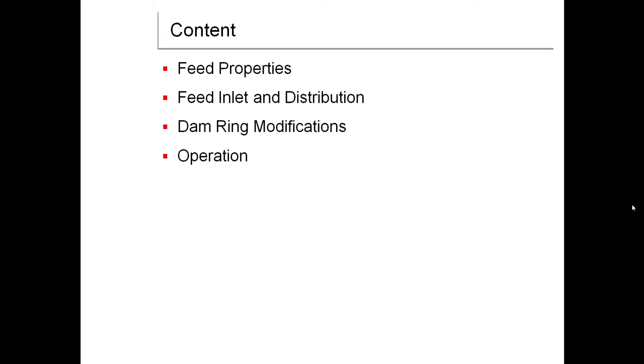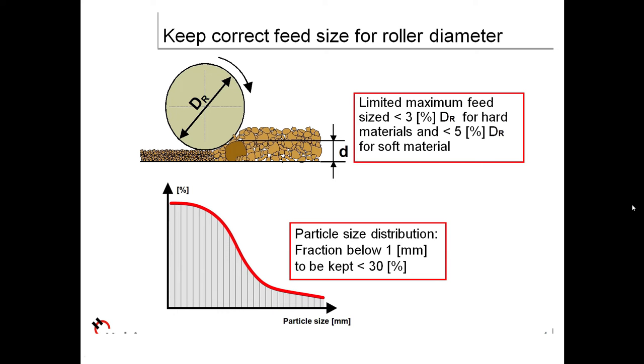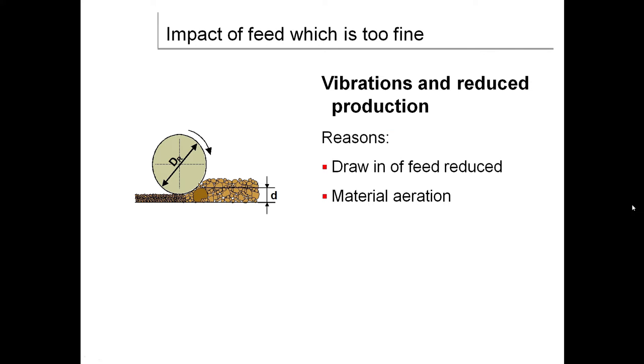First, feed properties. Keep correct feed size for roller diameter. You can see here limited maximum feed size is less than 3% of roller diameter for hard material and less than 5% for soft material. Particle size distribution fraction below 1mm to be kept less than 30%.